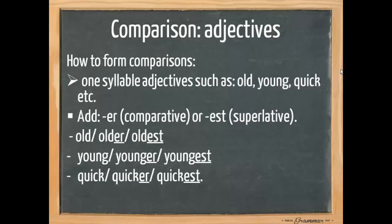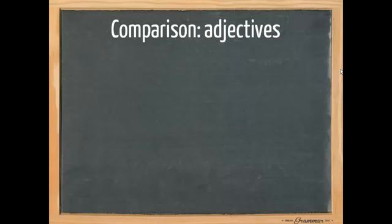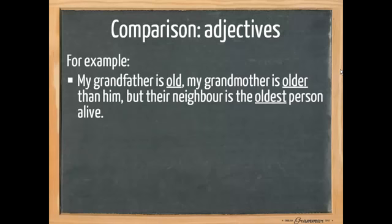I'm going to show you some examples in sentences. For example, my grandfather is old, my grandmother is older than him, but their neighbour is the oldest person alive. So my grandfather is old, here old is an adjective because it says something about the noun, my grandfather. Then when we compare my grandfather to my grandmother, we must conclude that my grandmother is older. So here we use a comparative.